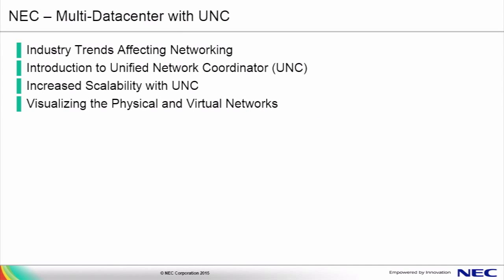To recap this session on NEC's solution for multiple data center deployments, we discussed four bullets. First, we talked about industry trends impacting networking, namely those that cause operational inefficiencies and increased data center network complexity. We introduced the Unified Network Coordinator, which is NEC's solution for these problems. We discussed the benefits of the UNC, including increased scale and simplified operations. And finally, we illustrated a demo of the UNC in action, showing how it can visualize both the physical and virtual networks. For more information, consult NEC's website for documentation on the UNC for more complex configuration scenarios. We look forward to seeing you in the next video.